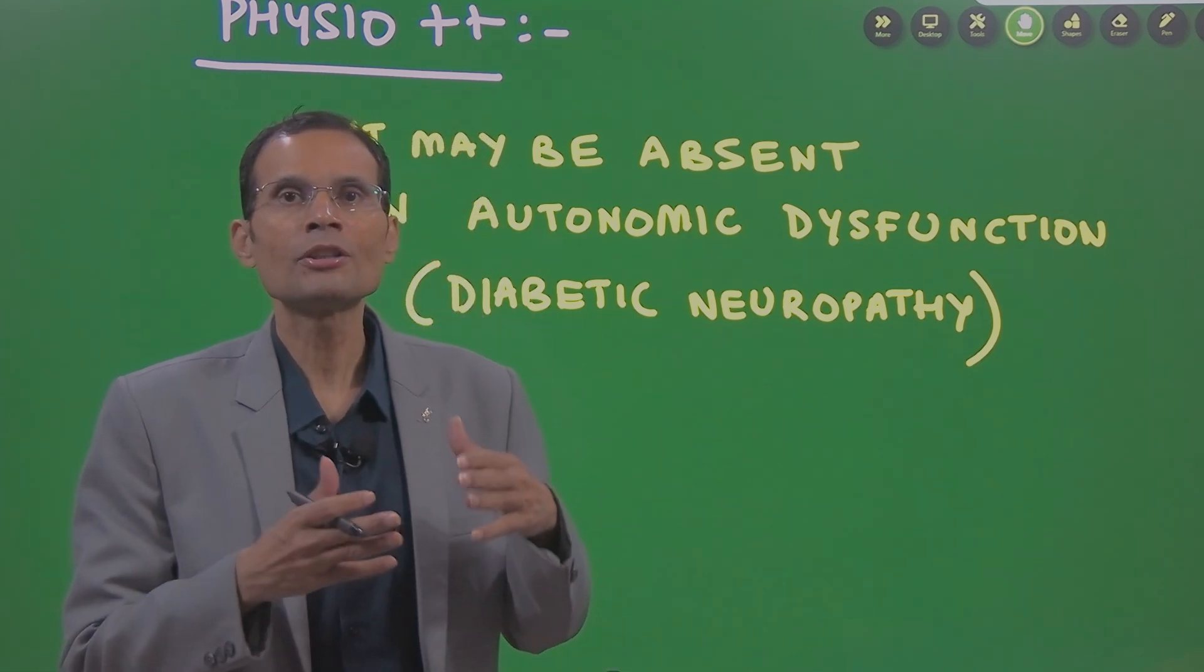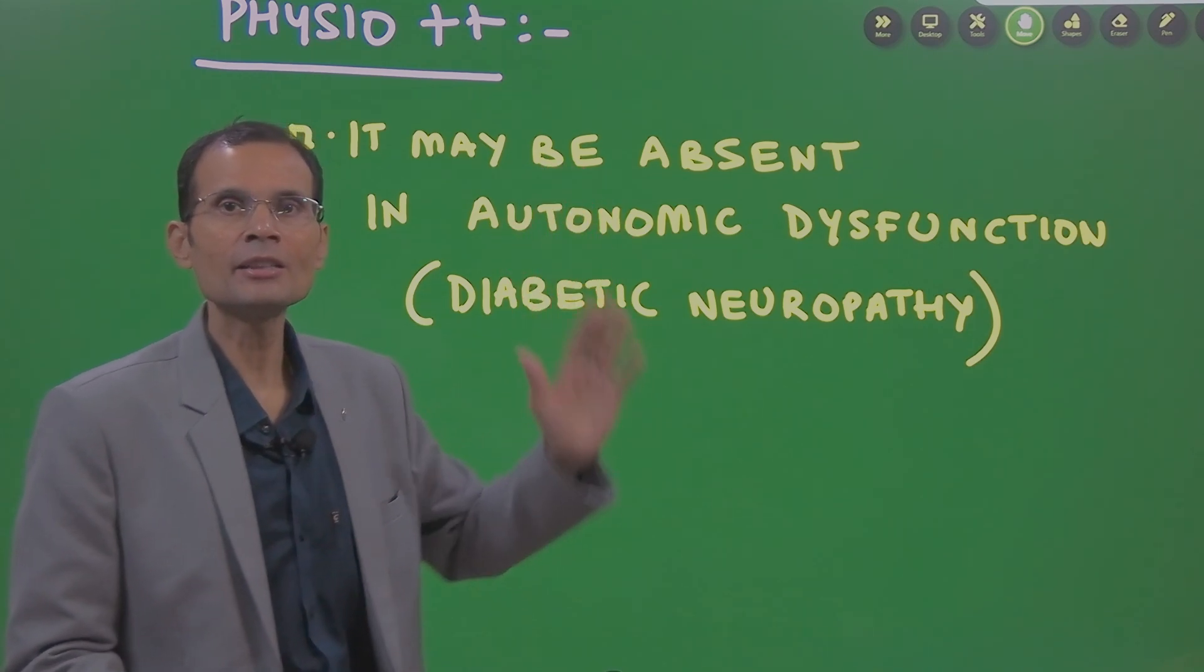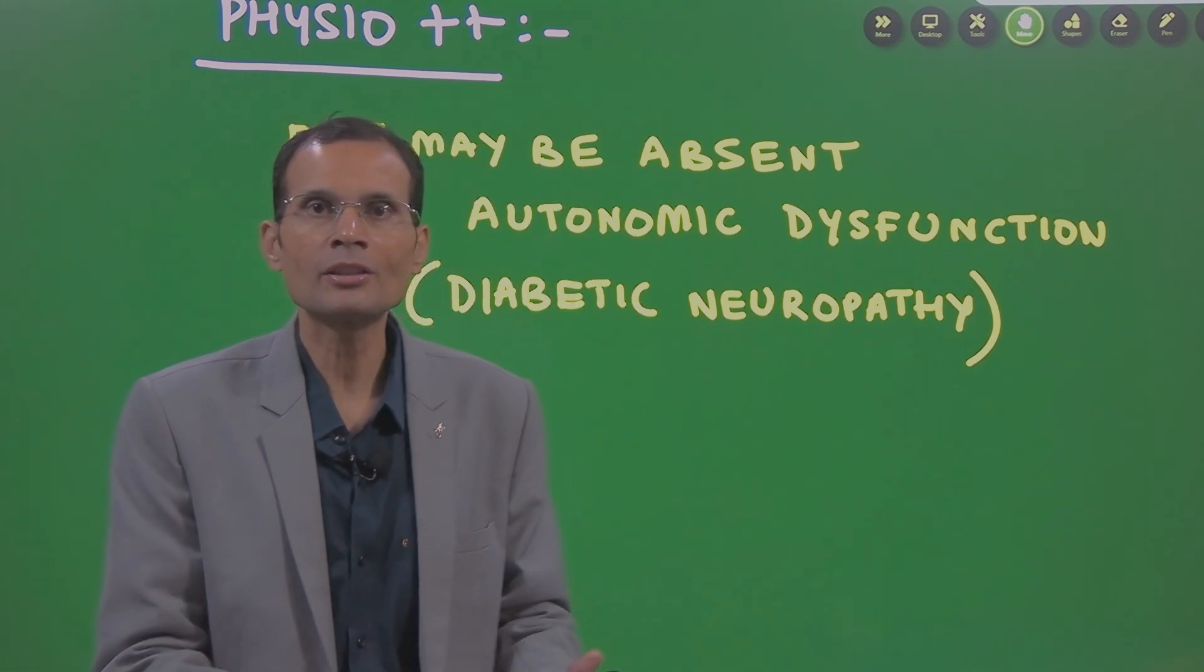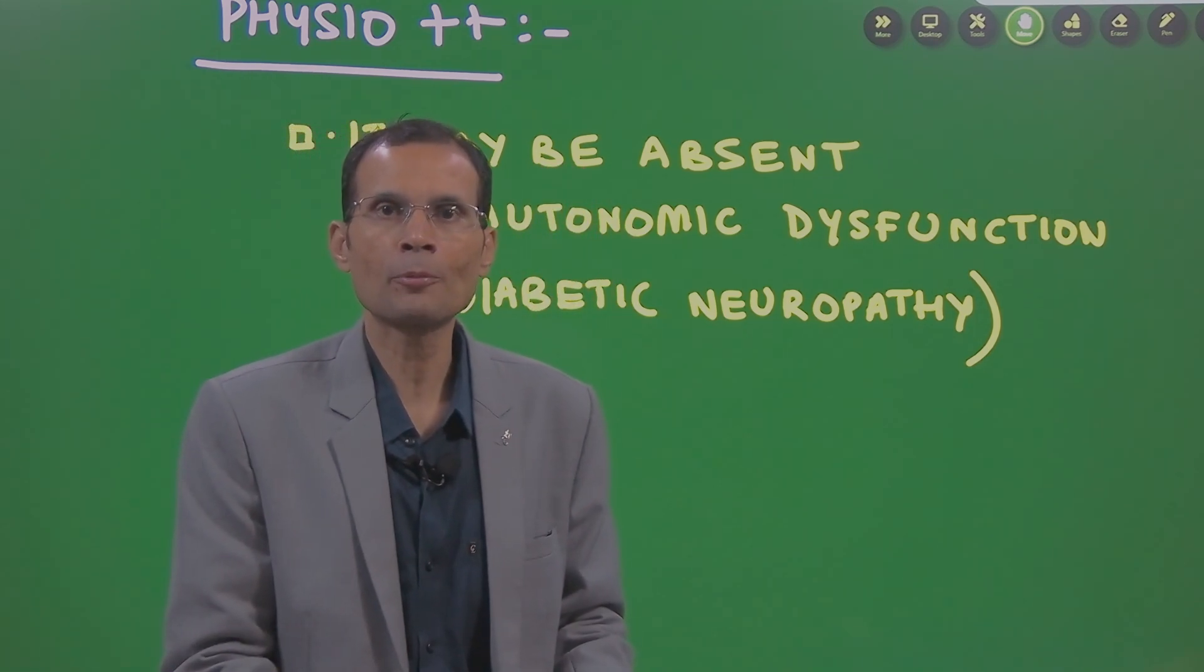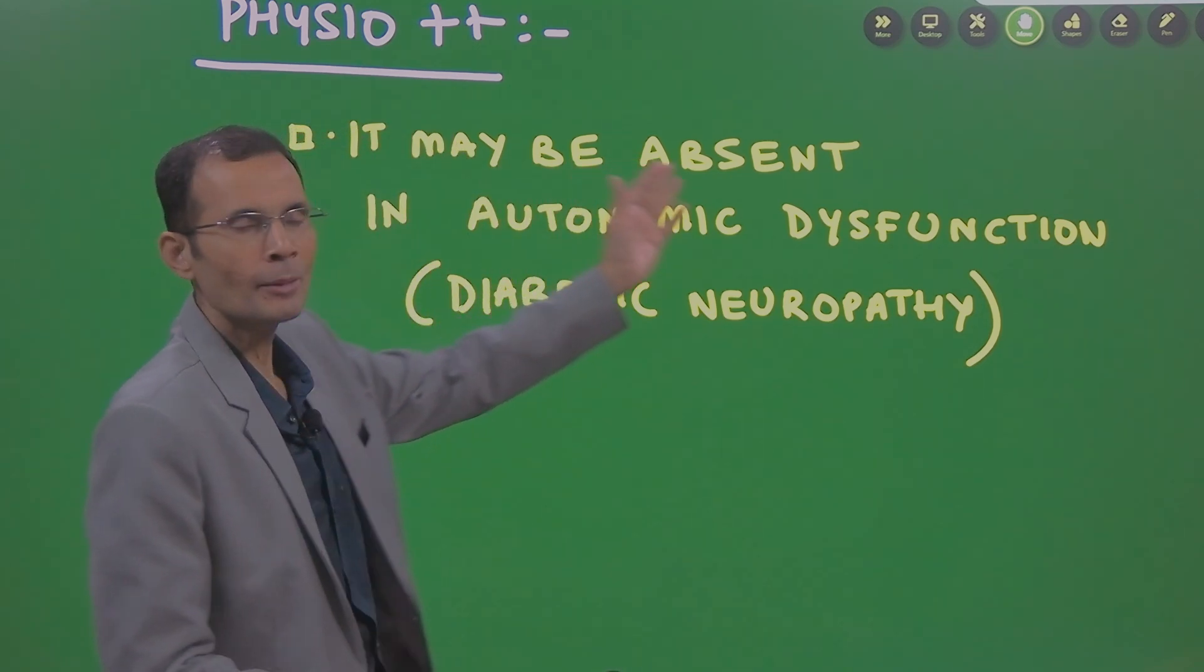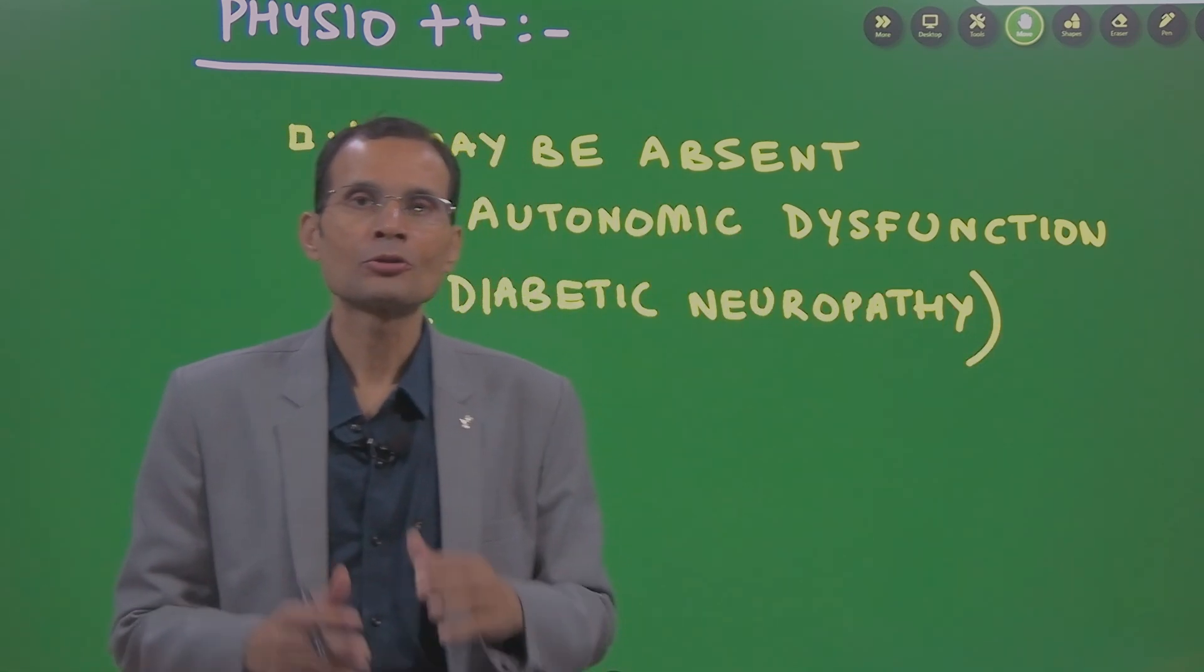So, if there is autonomic dysfunction because of a condition like diabetic neuropathy, then we will not be seeing this sinus arrhythmia because autonomic nerves, they are not functioning properly. And therefore, they will not be able to alter the heart rate and heart rhythm.